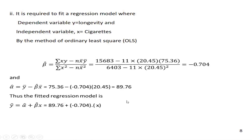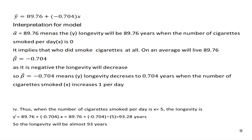Now the most important part: we have fitted the regression line. You can give any value of x — the number of cigarettes, 10 or 25 — and find the estimated longevity, the number of years they are going to live. So before making the prediction, let us know how to make the prediction. What is the interpretation of the model? Alpha is the intercept, which is nothing but the value of y when x is equal to zero.